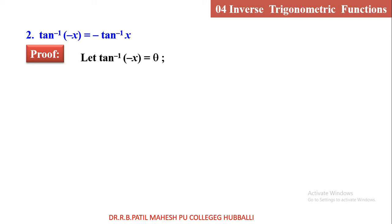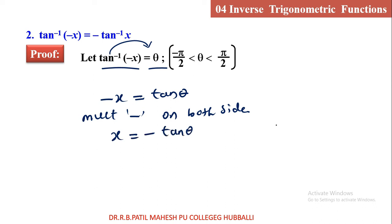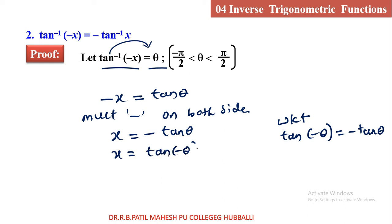Let tan inverse of minus x equal to theta, where theta is between minus pi by 2 to plus pi by 2. Taking tan inverse to the right side: minus x is equal to tan theta. Multiply minus on both sides: x is equal to minus tan theta. We know that tan of minus theta is minus tan theta. Using this result, I write minus tan theta as tan of minus theta. Taking tan to the left side: tan inverse x is equal to minus theta.